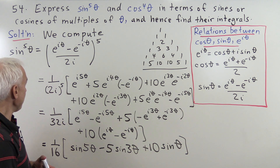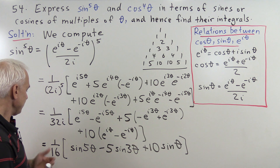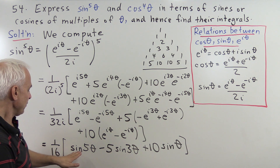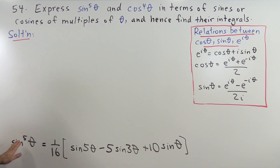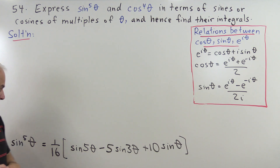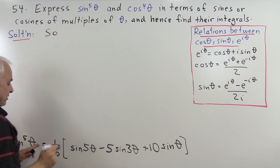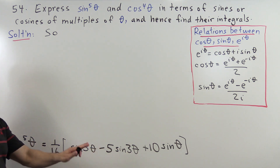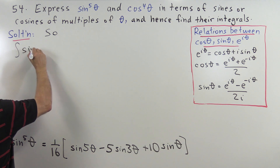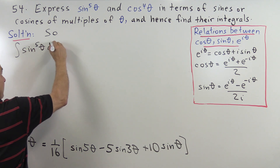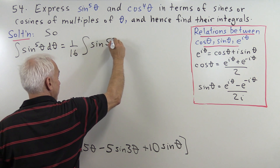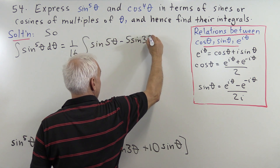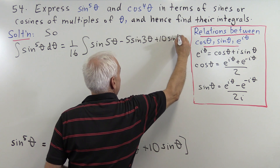So we have expressed sine to the fifth theta as a combination involving sine 5 theta, sine 3 theta, and sine theta. Now if we want the integral of sine to the fifth theta, we can use this expression, for which the integrals are much easier to compute. So the integral of sine to the fifth theta d theta is 1/16 times the integral of sine 5 theta minus 5 sine 3 theta plus 10 sine theta d theta.